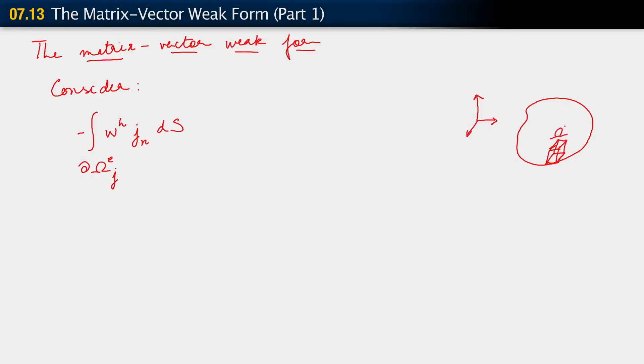We may think of that face as being ∂Ω_e^j. We recall that ∂Ω_e^j is the intersection of the boundary of that element Ω^e with the boundary of the problem. That's really the face of the element upon which we're imposing the boundary condition.